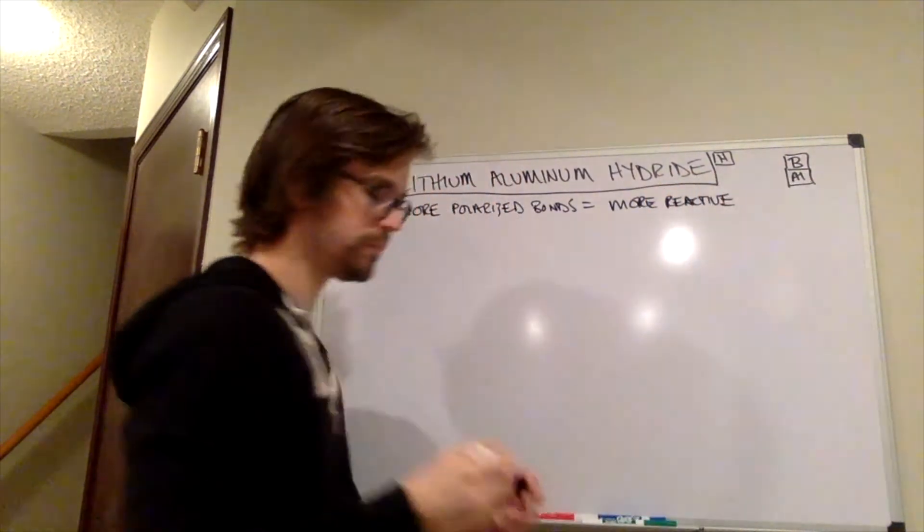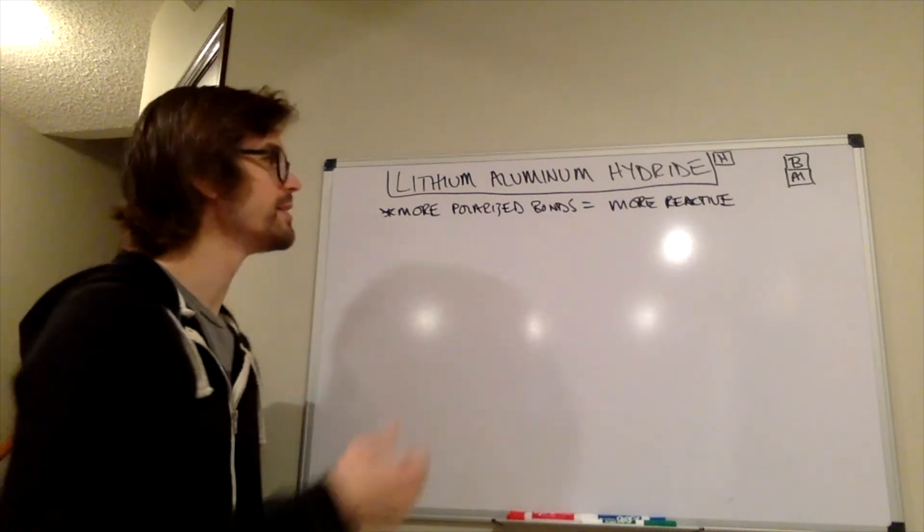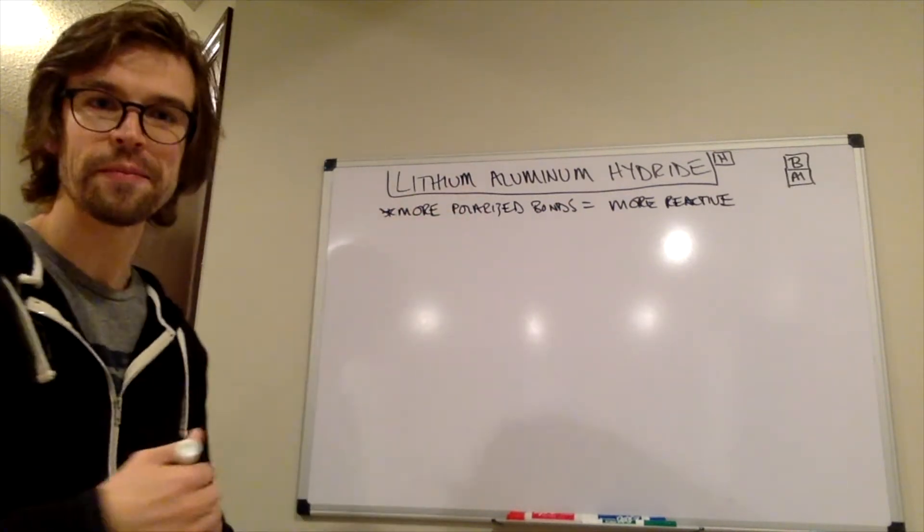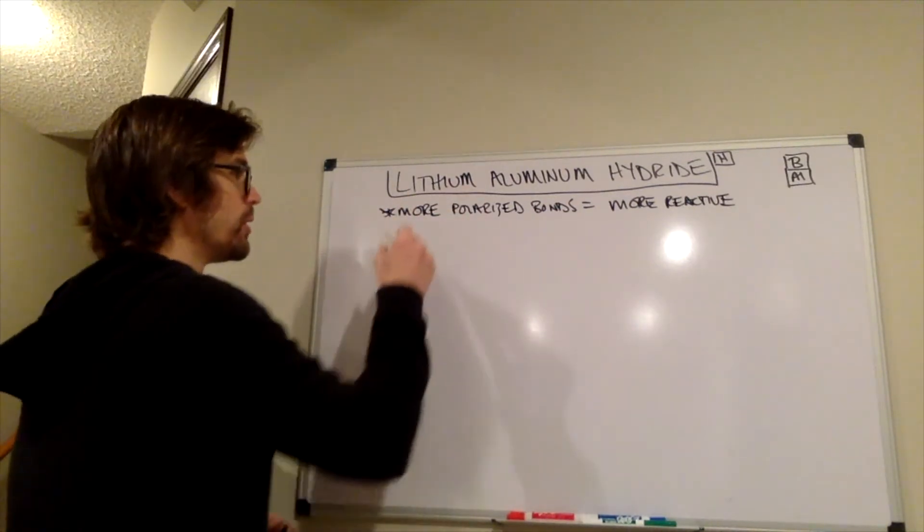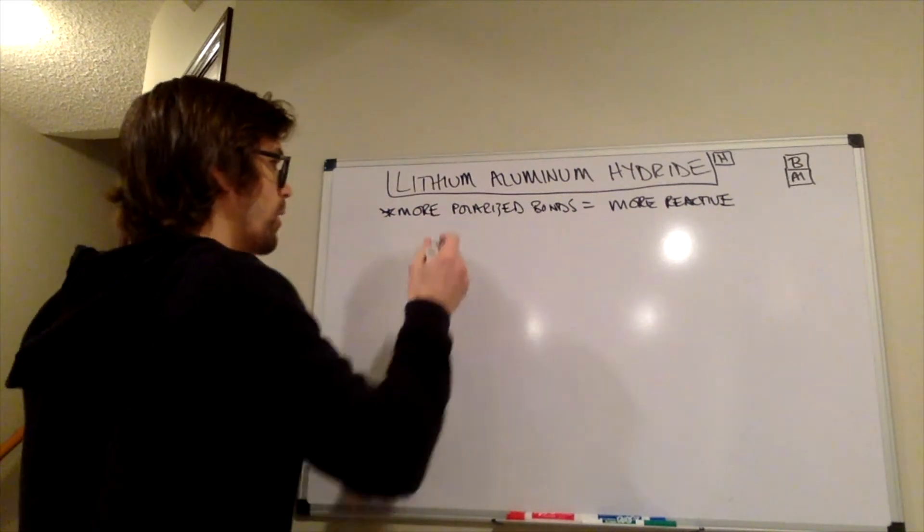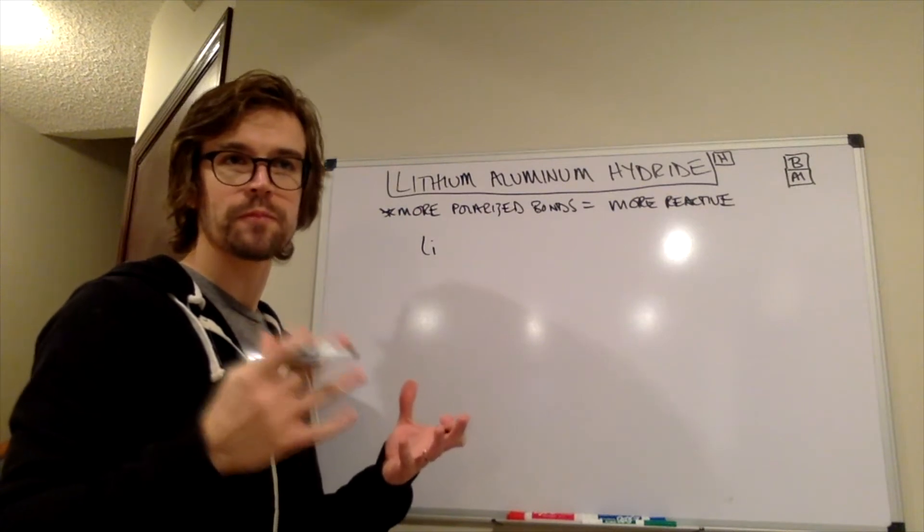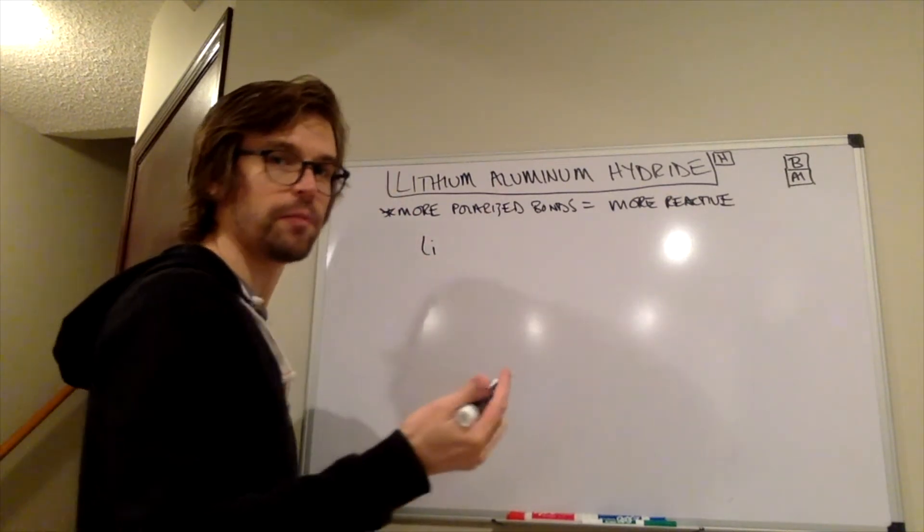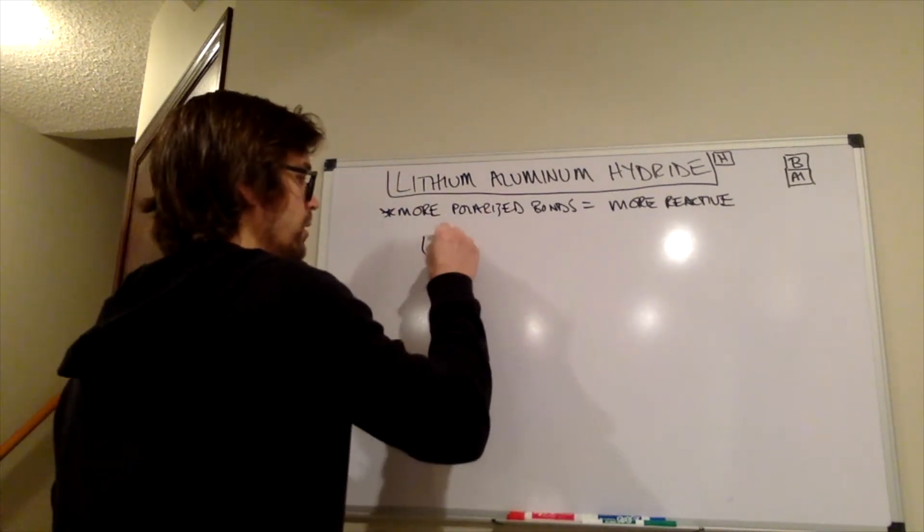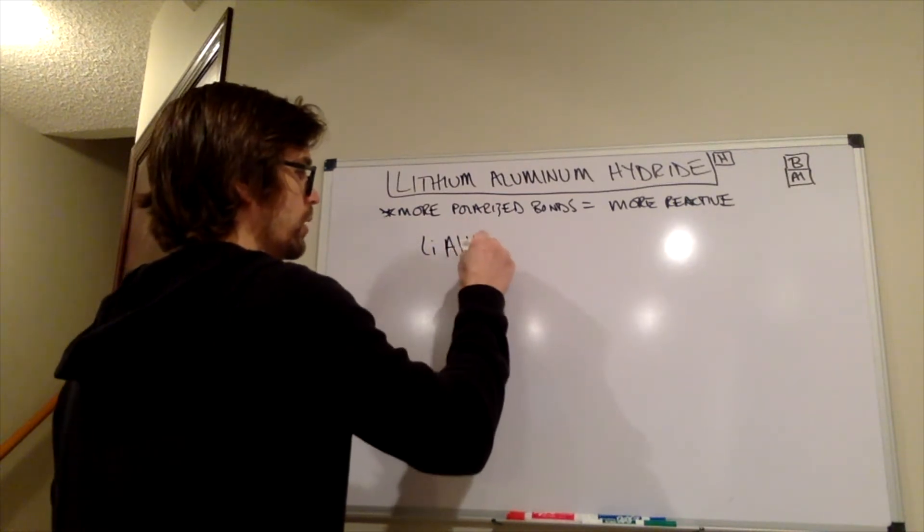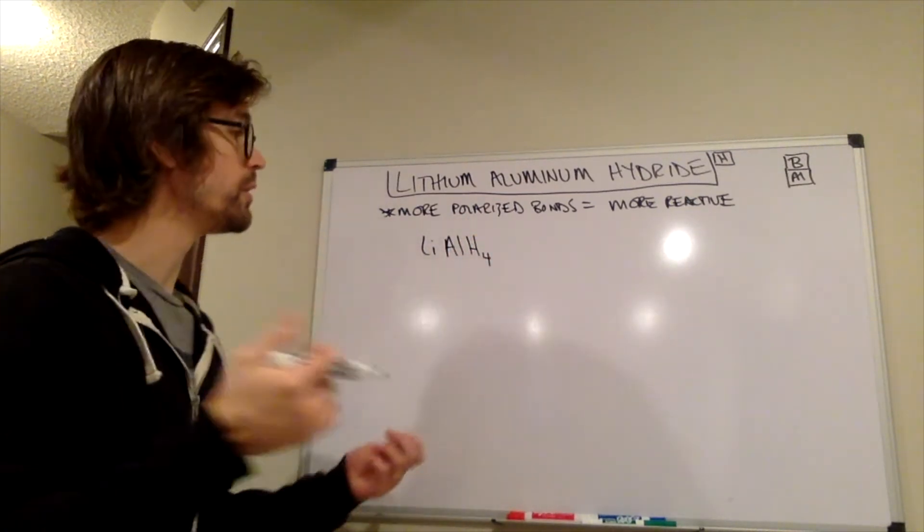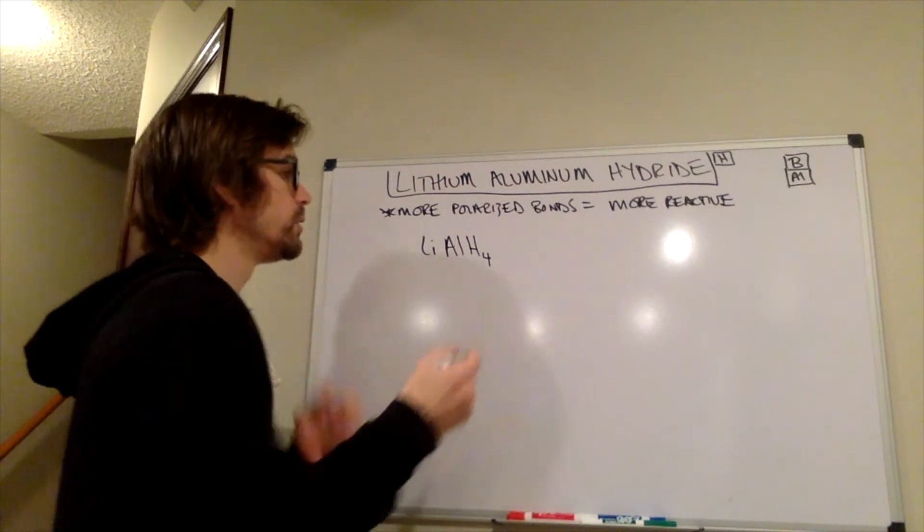So now let's think about, let's apply that to this new reagent. So we have lithium aluminum hydride, so it's going to look a lot like sodium borohydride. Lithium is Li, it's in the same column as sodium, aluminum is Al, and then H4.